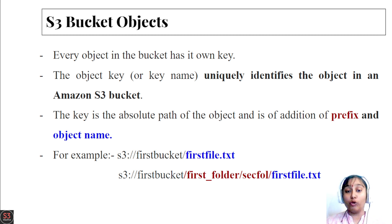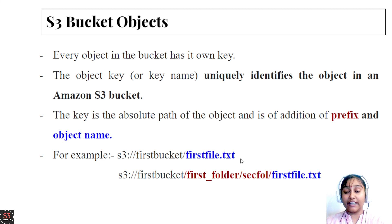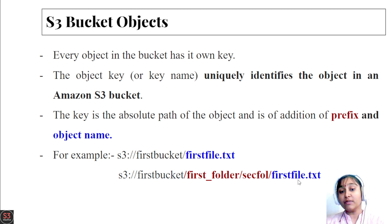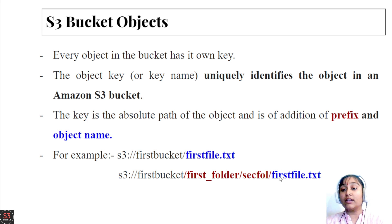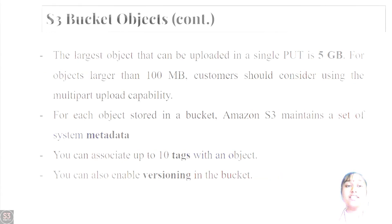For example, in the first case we have just the bucket name and object name with no prefix, because no folder was created. In the second example, the prefix is shown in red — the folders between the bucket name and the object name form the prefix. The first folder and second folder are the prefix, and the object itself, like 'first_file.txt', is shown in blue.